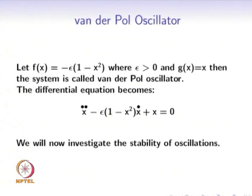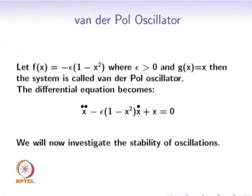Let us investigate the stability of oscillation. If ε >> 0, the oscillations of the Van der Pol oscillator are very stable. As ε decreases, the relative stability decreases. When ε = 0, the equation becomes x_ddot + x = 0, a linear oscillator. For ε < 0, we have unstable oscillations. Therefore, the Van der Pol oscillator has stable oscillations only if ε > 0.